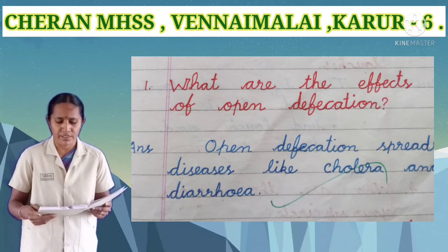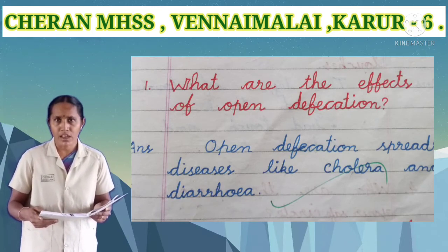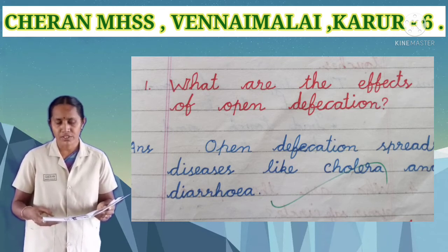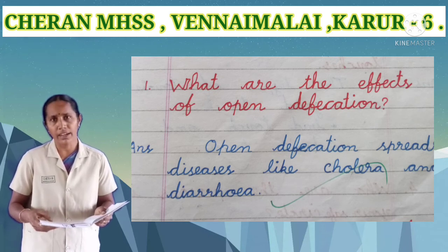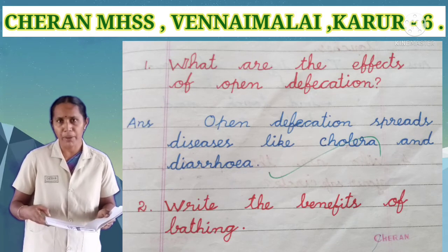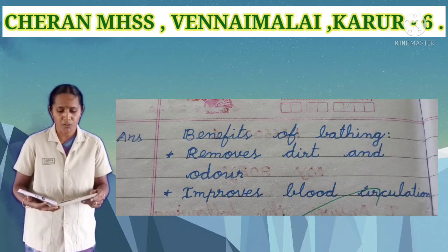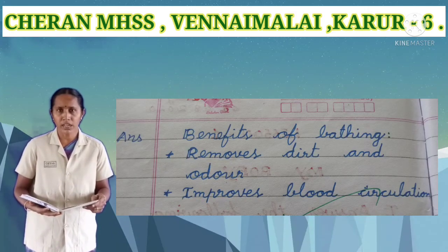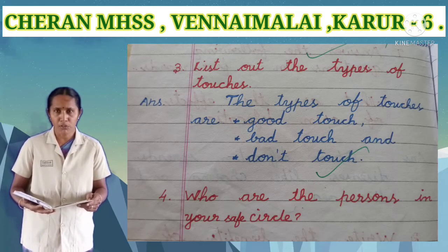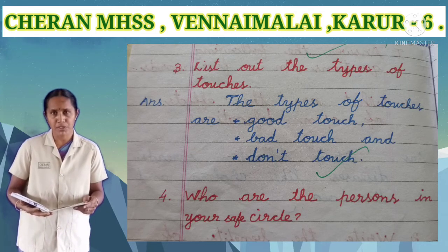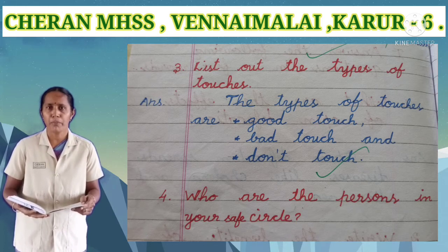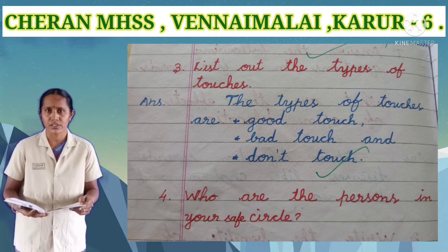First one: what are the effects of open defecation? Answer: open defecation spreads diseases like cholera and diarrhea. Second one: write the benefits of bathing. Benefits of bathing: removes dirt and odors, improves blood circulation. Third one: what is the list of types of touches? Answer: the types of touches are good touch, bad touch, and don't touch.